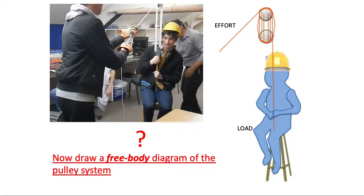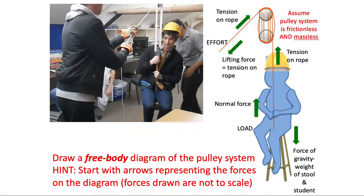Now draw a free body diagram. The load is the student. Show all the forces that are there: force of gravity, normal force, tension on the rope going upwards from the student, tension on the rope going back from the effort from the student who's pulling, and the lifting force itself.